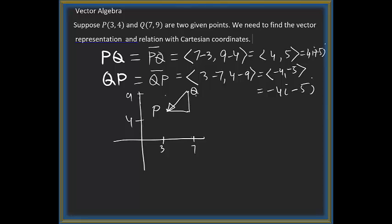In this case, the components are going negative because it's going down negative 5 units, then on the left side negative 4 units. That's why we call it QP. These are basically the representations.